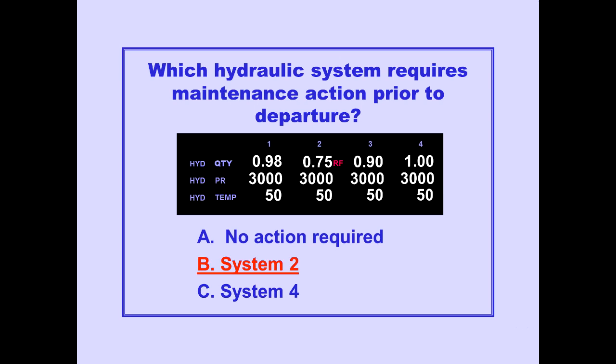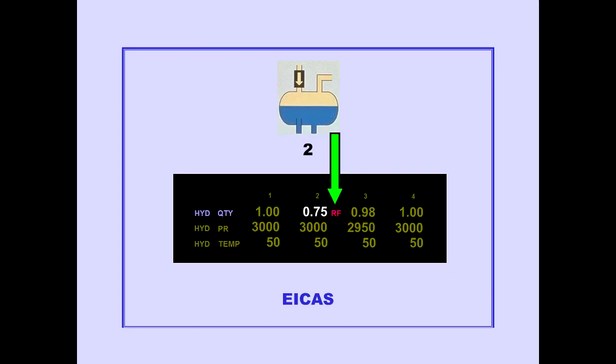Answer B is correct. When the reservoir quantity is at or below the refill level, the letters RF appear next to the quantity. This condition requires maintenance action prior to flight.